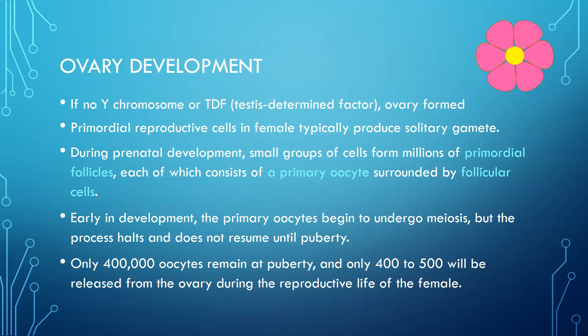During prenatal development, small groups of cells form millions of primordial follicles, each of which consists of a primary oocyte surrounded by follicular cells. Early in development these primary oocytes will begin to undergo meiosis, but the process will halt and will not resume until puberty. Meiosis is when you start splitting from 46 down to 23 chromosomes, eventually into a haploid cell with 23 chromosomes.